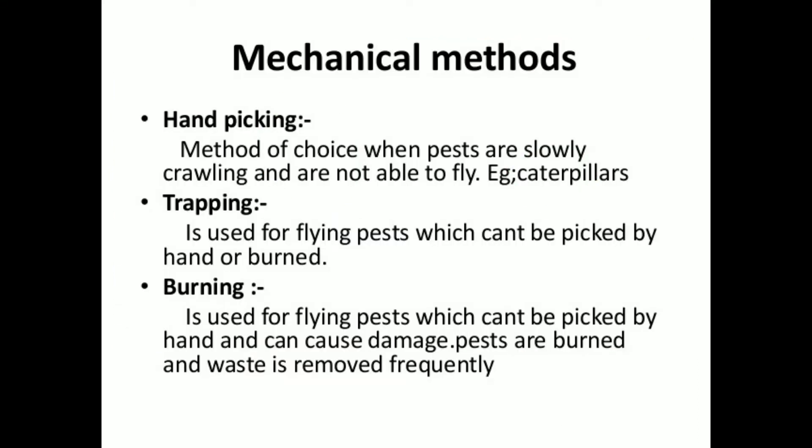Next is trapping. Insects that are not able to fly are attracted or collected with the help of different traps or insect collecting nets. For example, different moths, grasshoppers, or dragonflies.